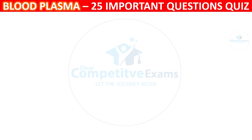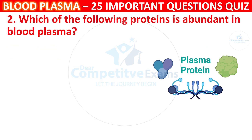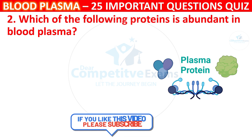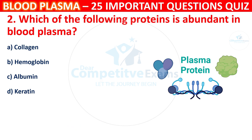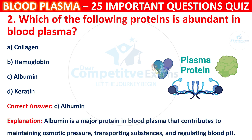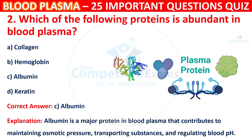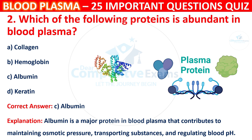Question 2: Which of the following proteins is abundant in Blood Plasma? Your options are Collagen, Hemoglobin, Albumin, or Keratin. The correct answer is C, i.e. Albumin. Albumin is a major protein in Blood Plasma that contributes to maintaining osmotic pressure, transporting substances, and regulating blood pH.